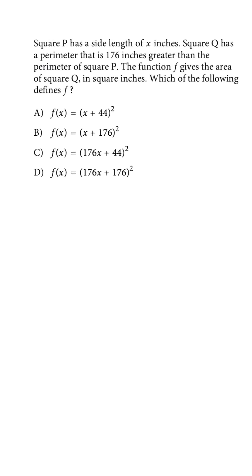We have an SAT problem dealing with perimeter and area of a square. We don't have any side lengths, but what they tell us is that for square P, x equals one side length. If we're talking about perimeter specifically, that means whatever x is, we have to multiply it by four.